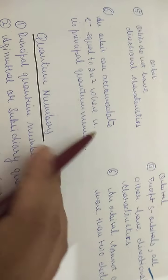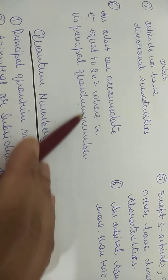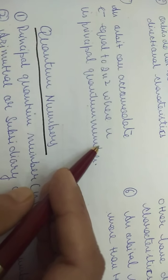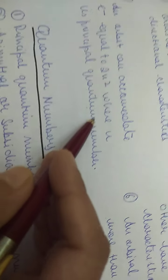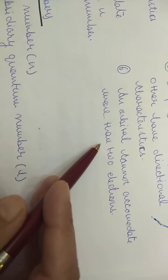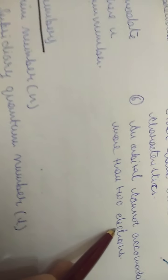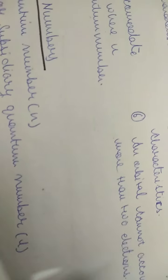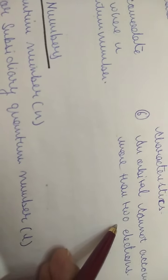An orbit can accommodate electrons equal to 2n², where n is the principal quantum number. So if n equals 1, it can accommodate 2 electrons; if n equals 2, it can accommodate 8 electrons. An orbital, however, cannot accommodate more than 2 electrons. In one sub-shell there can be a number of orbitals, but in one orbital there cannot be more than 2 electrons.